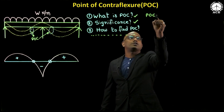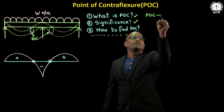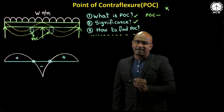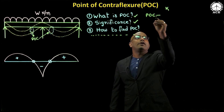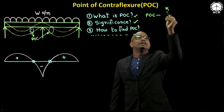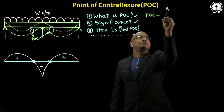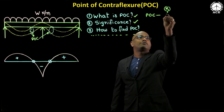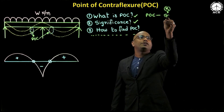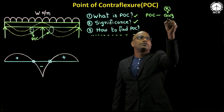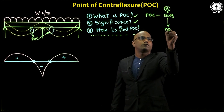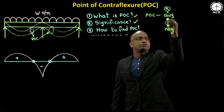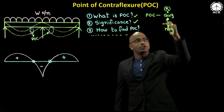We can formally define the point of contraflexure as follows. Assume K is the curvature. The point of contraflexure is the point at which the curvature changes from sagging to hogging, or hogging to sagging.